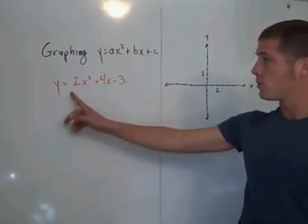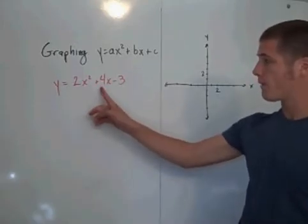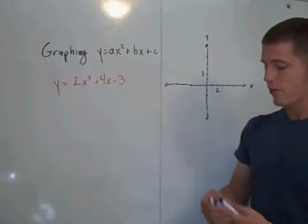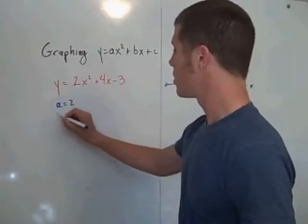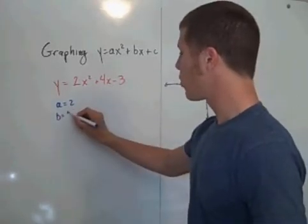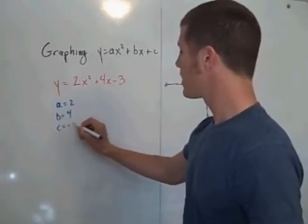Where a is 2, b is 4, and c is negative 3. So maybe that's the first thing that you should write down, is that your a value is 2, your b value is 4, and your c value is negative 3.